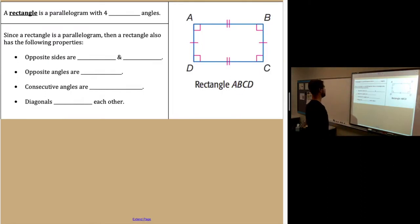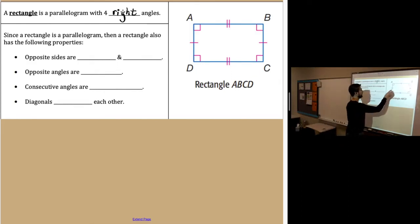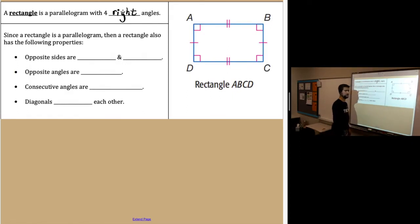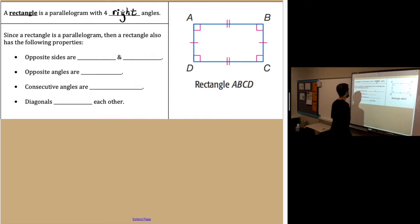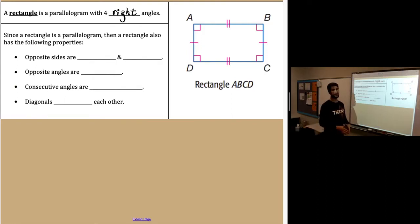Starting out our notes. A rectangle is a parallelogram with four right angles. In other words, if we look at this rectangle, angles A, B, C, and D are all right angles. Remember, right angles are 90 degrees. And the thing to note is that a rectangle is a parallelogram, and since a rectangle is a parallelogram, the rectangle has all the properties of a parallelogram.